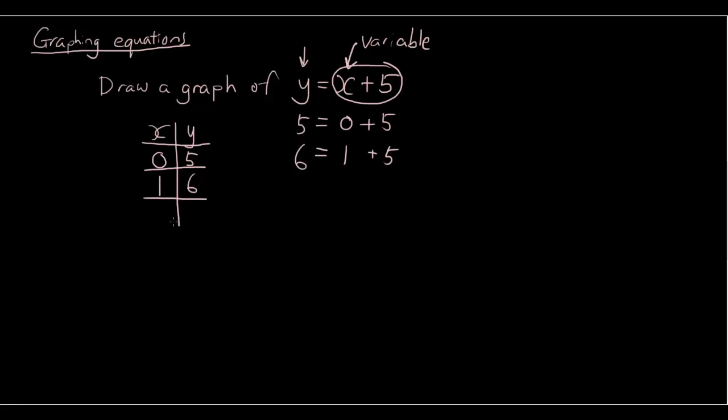Now we can continue and let's say x is equal to 2. So 2 plus 5 is 7. Let's make x equal to 3. 3 plus 5 is 8. And now we have a table of values that we have just generated from this equation.